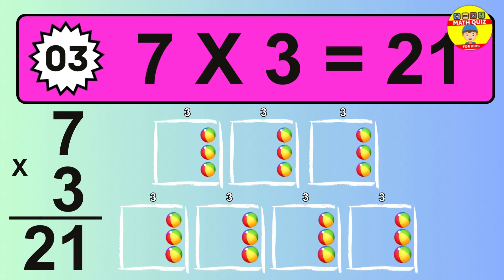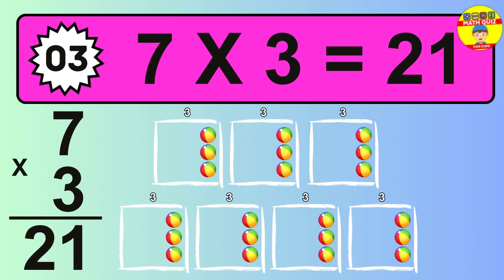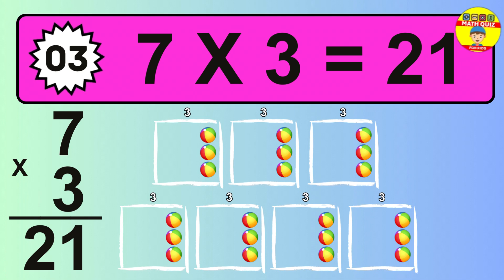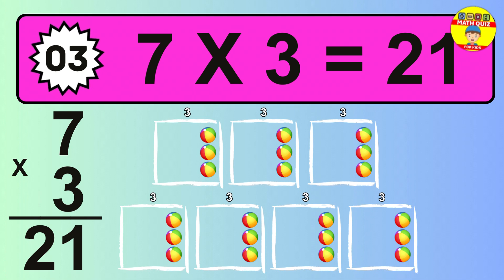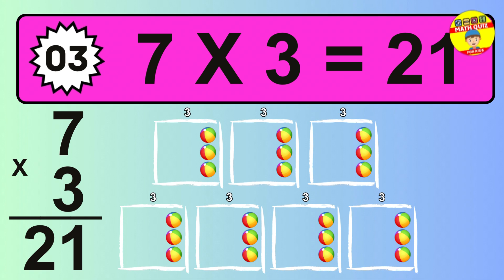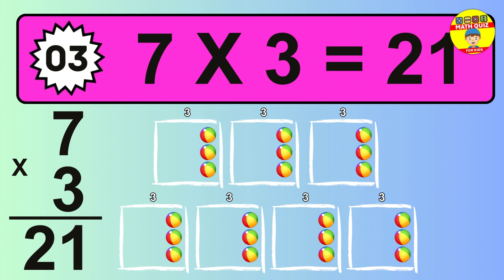The answer is 7 times 3 is 21. To calculate, we have 7 groups with 3 balls each one. So, how many balls do we have? 21 balls.